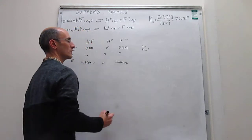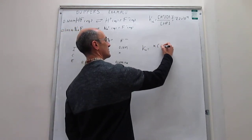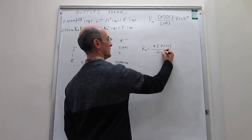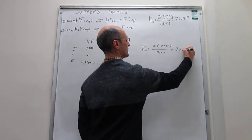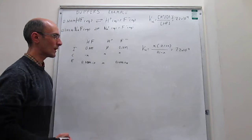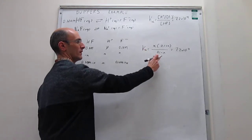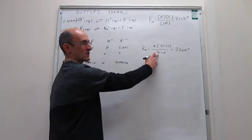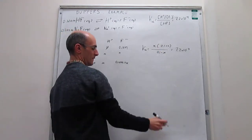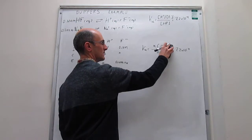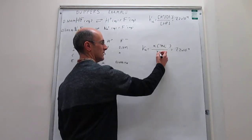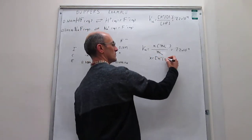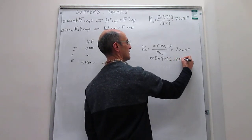We come to the equilibrium constant: Ka = X × (0.1 + X) / (0.1 − X) = 7.2 × 10⁻⁴. We can approximate by neglecting X compared to 0.1 both in the denominator and numerator. Those two factors cancel, and we get that X equals the concentration of protons equals Ka — in this case, 7.2 × 10⁻⁴.